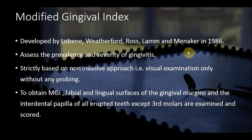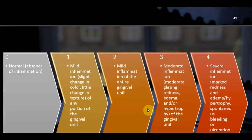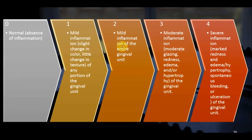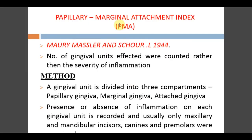The Modified Gingival Index was developed by Lobene and coworkers in 1986, assessing prevalence and severity of gingivitis using a strictly non-invasive approach — visual examination only, without any probing. Labial, lingual gingival margins, and interdental papillae of all erupted teeth except third molars are examined. Scoring: 0 = no inflammation; 1 = mild inflammation in a portion of the gingival unit; 2 = mild inflammation of the entire gingival unit; 3 = moderate inflammation with redness, edema, and hypertrophy; 4 = severe inflammation with spontaneous bleeding.